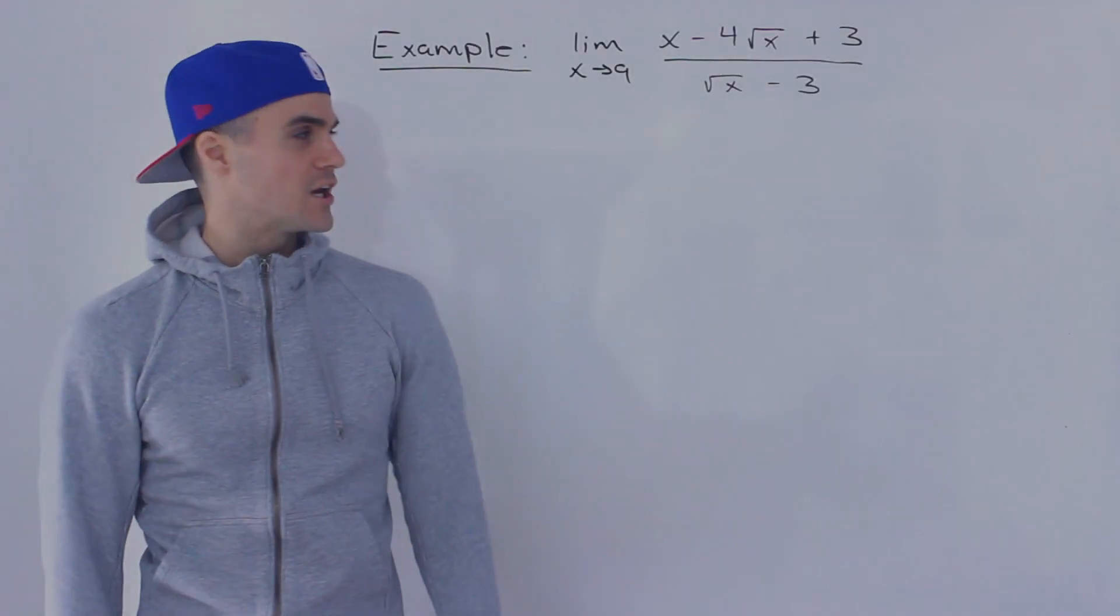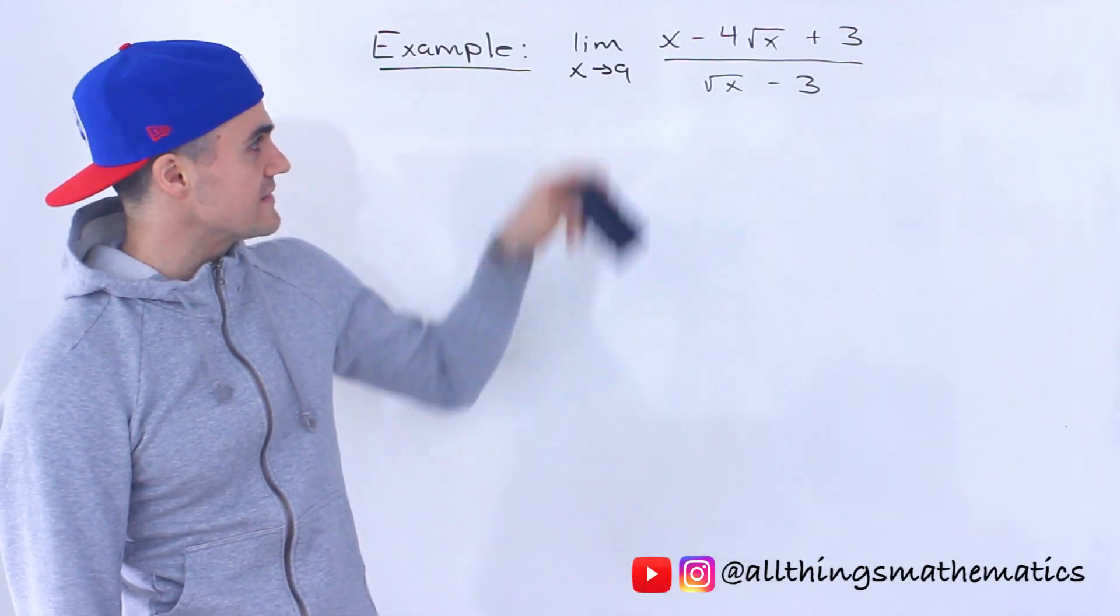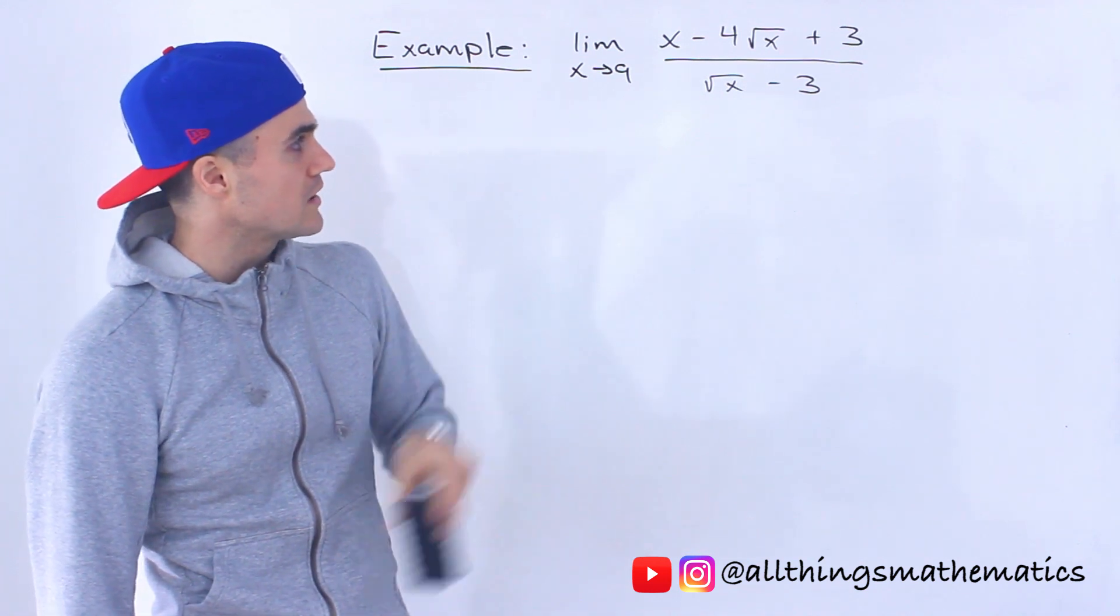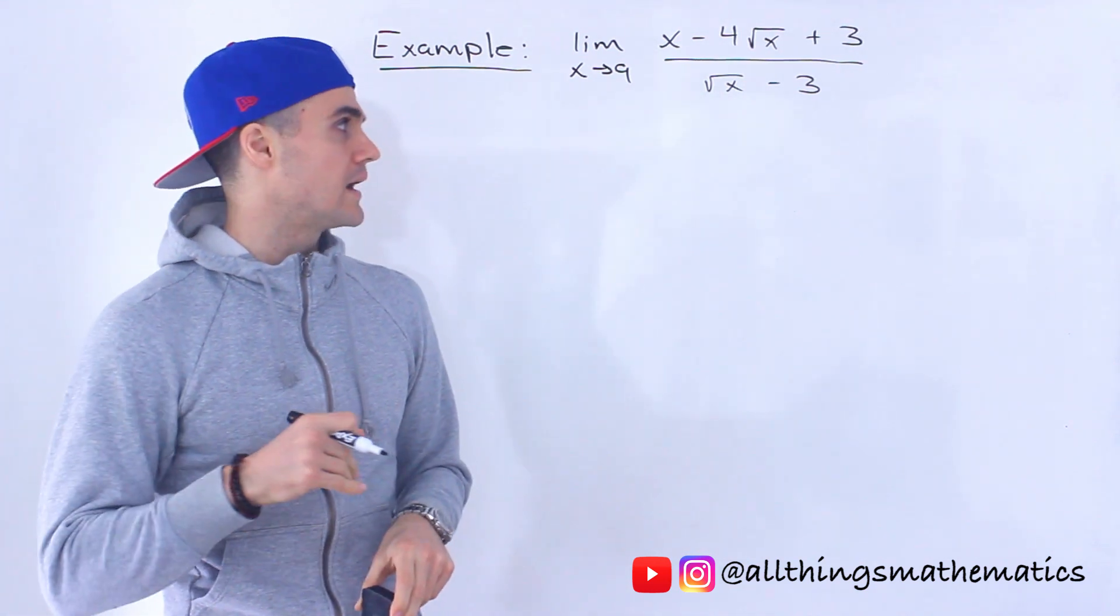What's up everyone? Welcome back. Patrick here. Moving on to the next question. We've got to find this limit over here: limit as x approaches 9 of x minus 4 root x plus 3 all over root x minus 3.